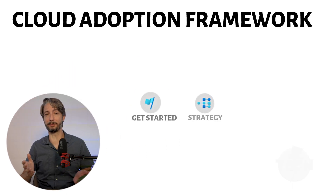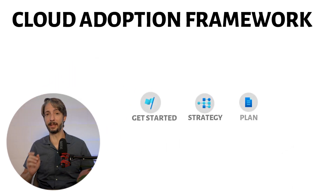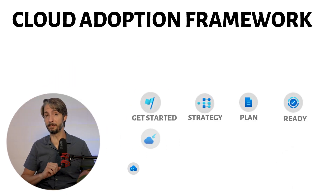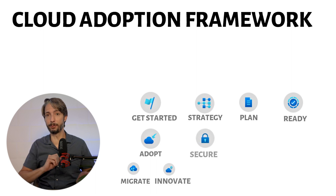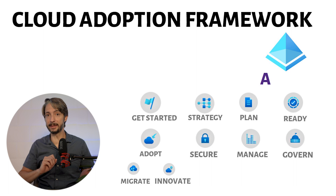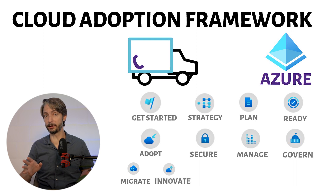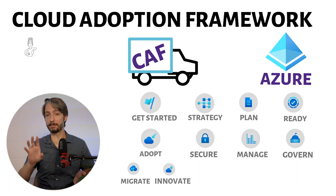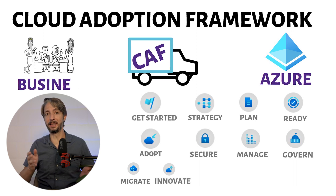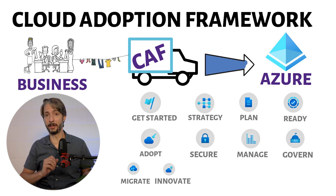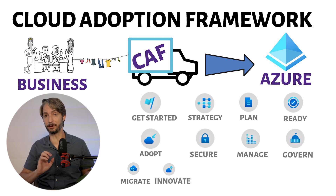The Microsoft Cloud Adoption Framework, or CAF, is a collection of documentation, implementation guidance, best practices, and tools to bring a business into Azure. It guides the business through the whole process, starting by analyzing the business requirements and where the benefit of the Azure cloud lies. In other words, it prepares the business and provides guidance in the entire cloud journey.